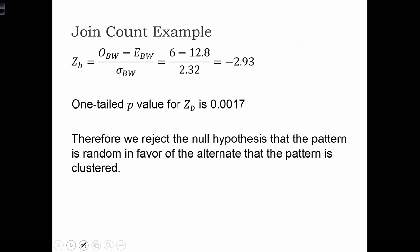And when we compute the statistic, we have the observed 6 minus 12.8 over 2.32. The statistic is now minus 2.93, which is a z-score with a p-value of 0.0017.